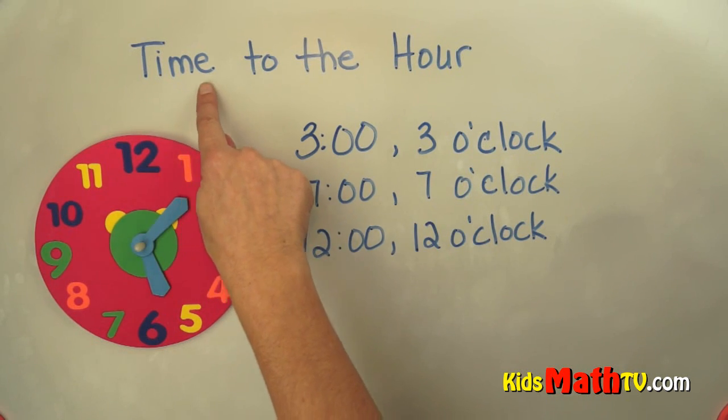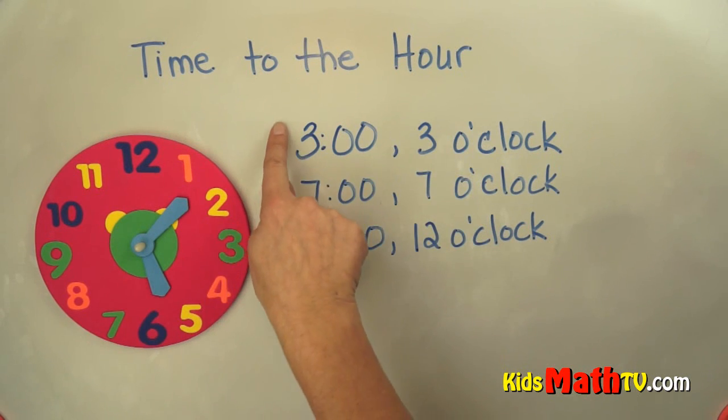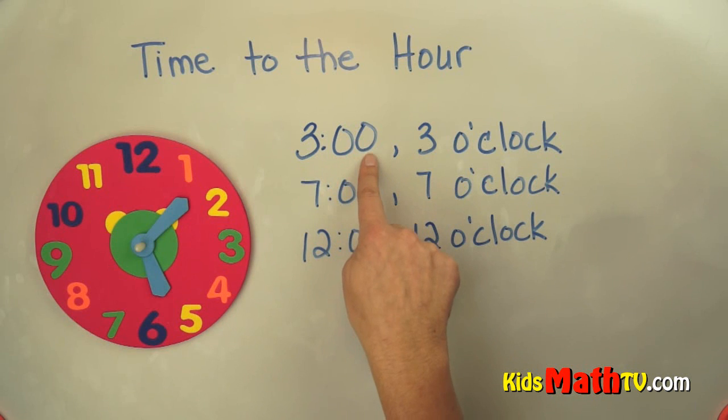In this lesson you will learn about telling time to the hour. So here I have some times: 3 o'clock, we can write it as 3:00 or 3 o'clock. Same with 7 o'clock and 12 o'clock.